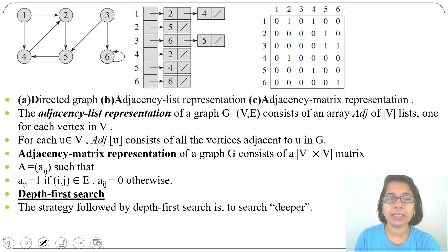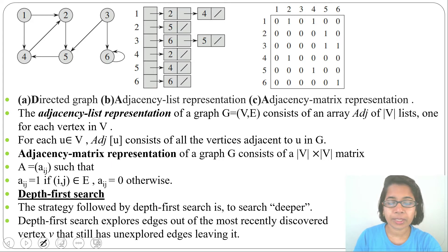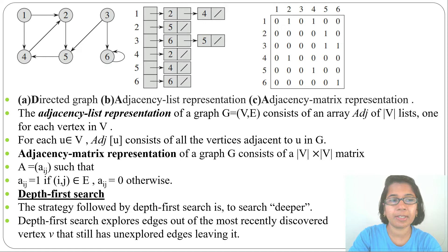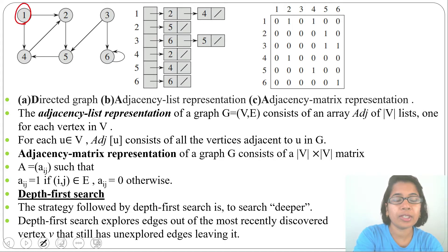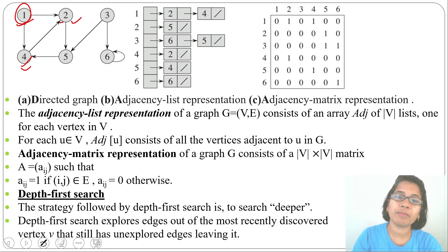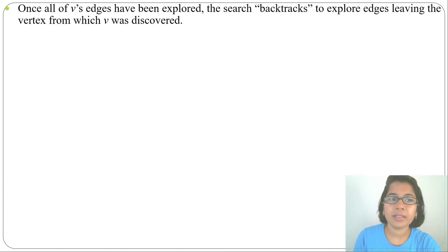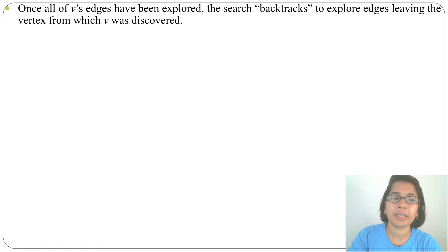The strategy followed by depth first search is to search deeper — that's why the name is depth first search. DFS explores edges out of the most recently discovered vertex that still has unexplored edges leaving it. For example, from vertex one, the unexplored adjacent vertices are two and four. Every time it will visit one adjacent that is not yet visited. Once all edges have been explored, the search backtracks to explore edges leaving the vertex from which the current vertex was discovered.